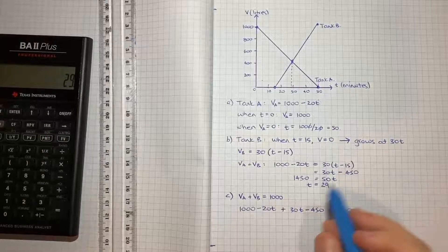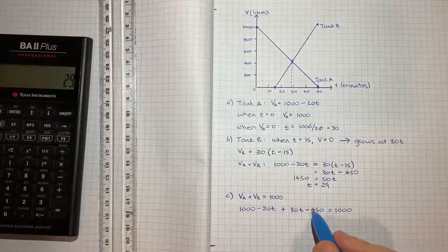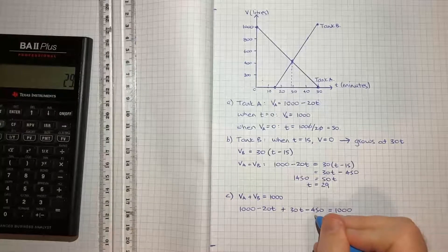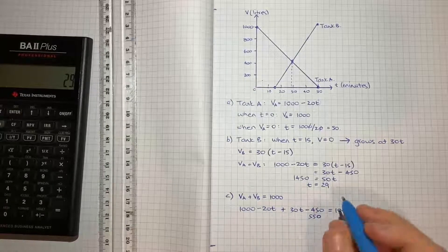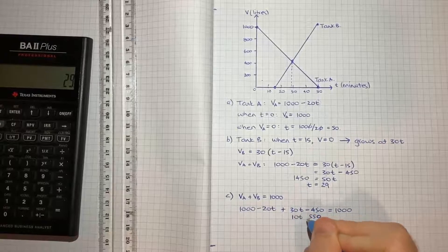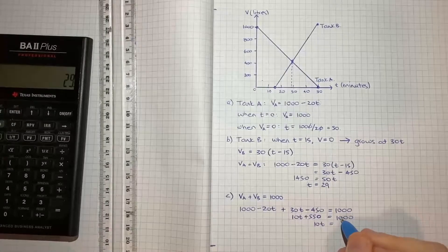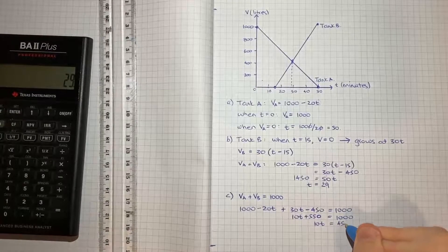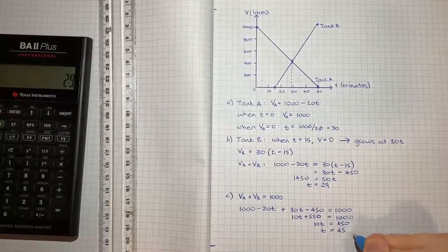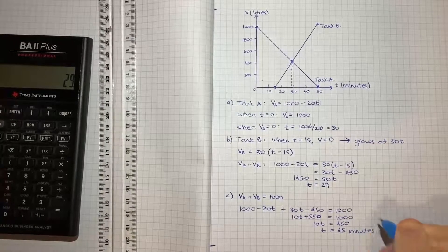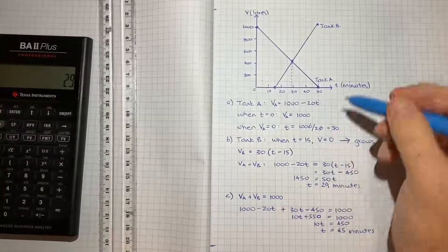So 10T = 1000 - 550 = 450. Therefore T = 450 ÷ 10 = 45 minutes. So 45 minutes, let's have a look. That's going to be at this point here, 45.